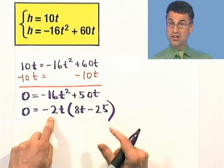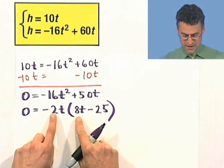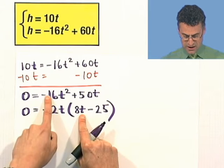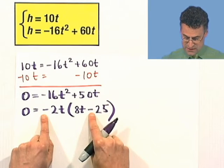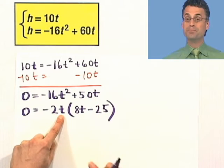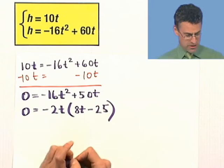Let's just verify that. You can always check your work. Just distribute. Negative 2t times 8t is negative 16t squared. Excellent. And then a negative times a negative is a positive. 2 times 25 is 50t. So you can actually check your answer. That equals zero.